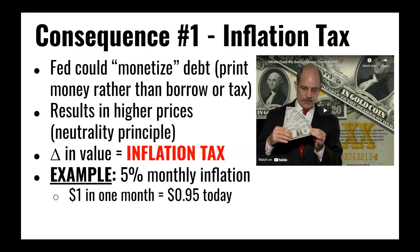When the Federal Reserve monetizes debt by printing money to help pay the bills of the United States government, it creates more money supply, which leads to higher price levels or inflation because of that neutrality of money principle. When your money is beginning to lose value, you're beginning to fall behind where you were in terms of purchasing power. There's a really good video explaining this whole process from NPR and PBS, and I will link that in the description.